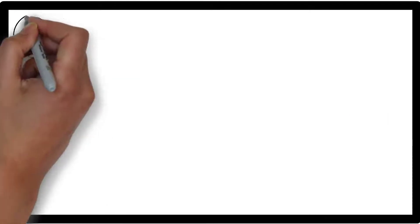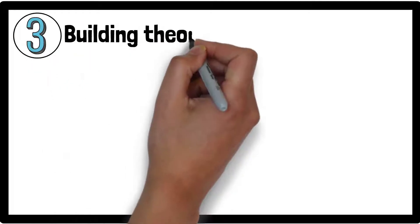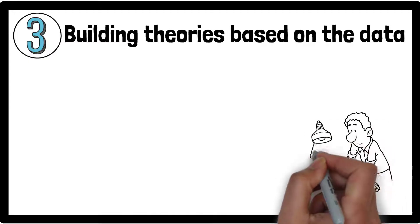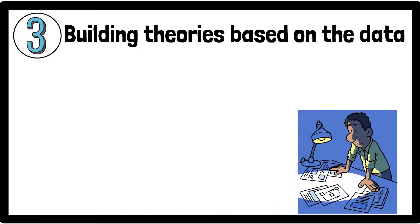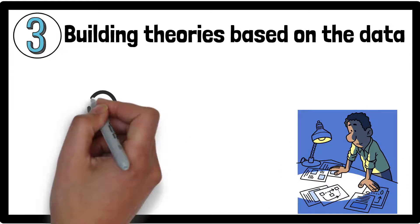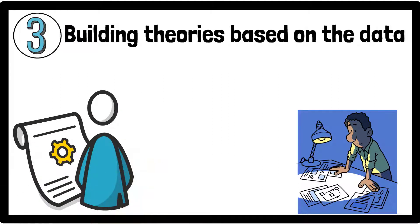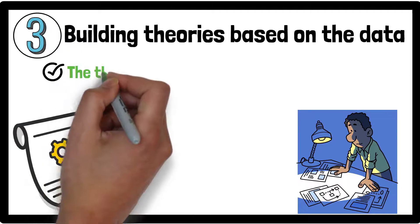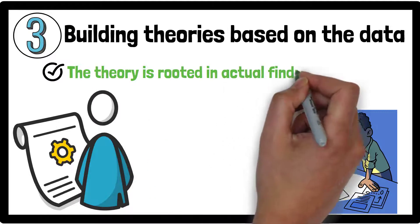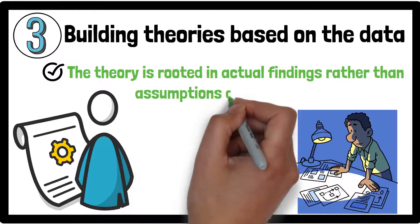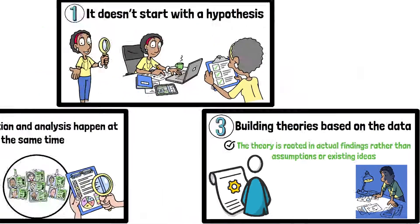The third key feature is building theories based on the data. Researchers look for recurring themes or concepts and use these to develop a theory that accurately represents participants' experiences. This step ensures that the theory is rooted in actual findings rather than assumptions or existing ideas.